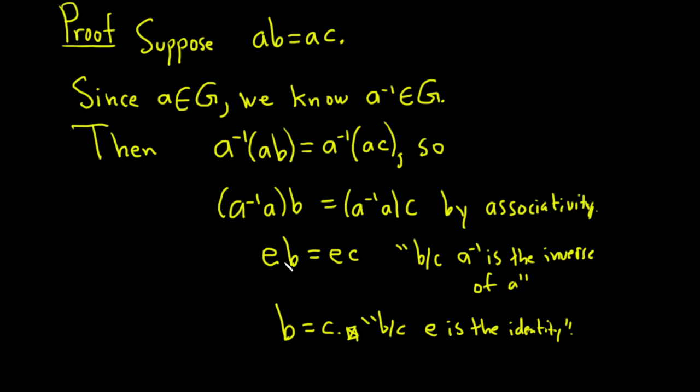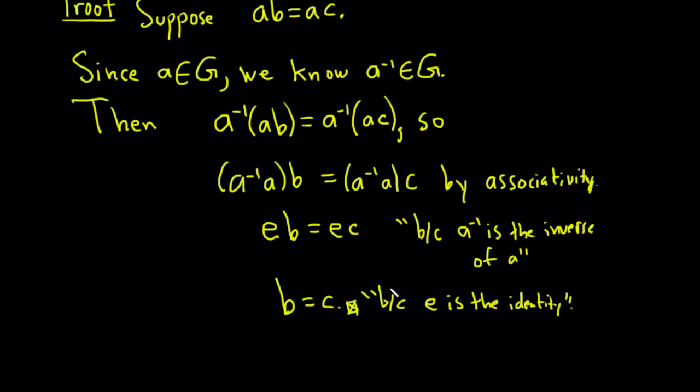And then because e is the identity, e times b is b, and e times c is c. And that completes the proof.